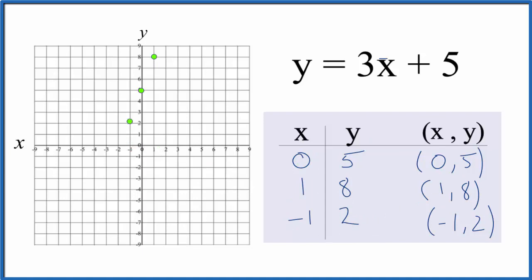You can see they all line up. Let's put a line through that. Let's put arrows on that to show that this goes to infinity. This is the line for the linear equation y = 3x + 5.